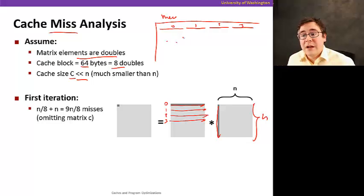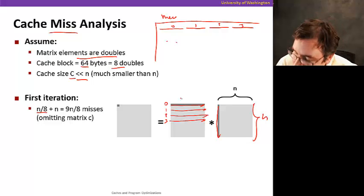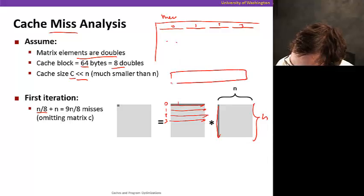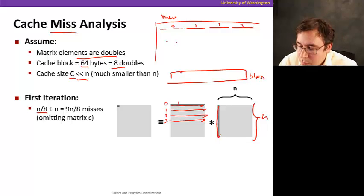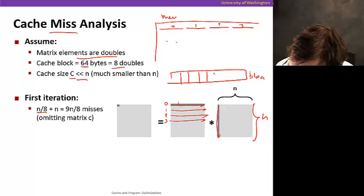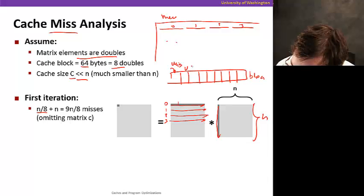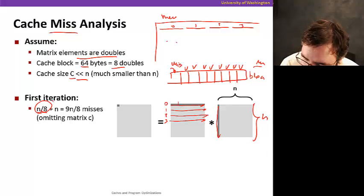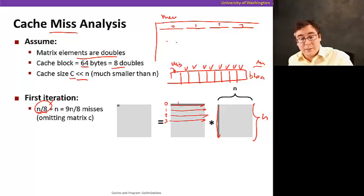The number of misses for reading a row of A is going to be n divided by 8. As we read along the row, each cache block holds 8 doubles, so we access the first element — it's a miss — then the next 7 are hits, then the next one is a miss, and so on. That's why it's n over 8. This takes advantage of spatial locality.